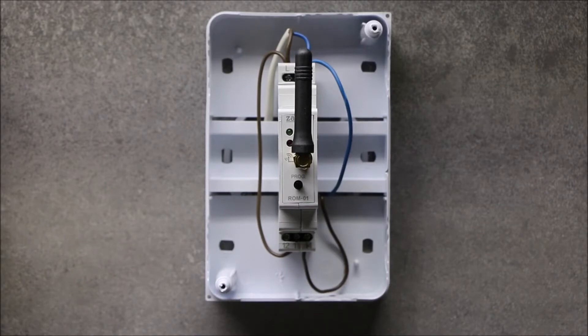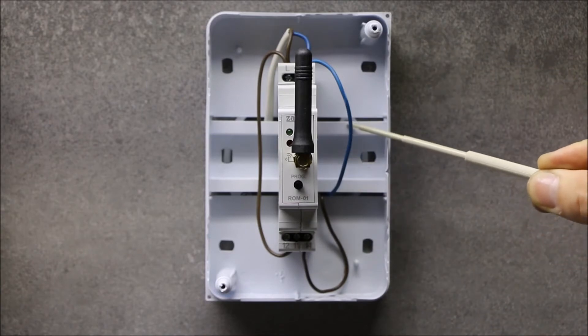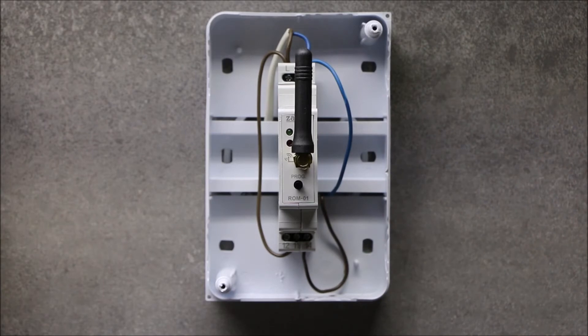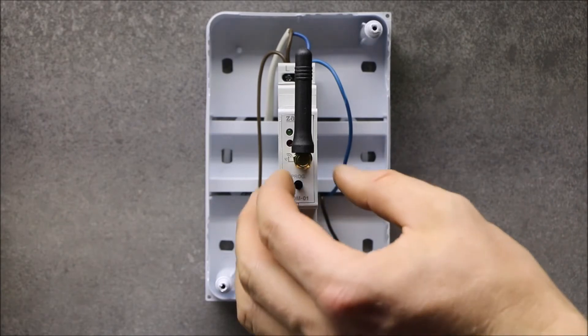The ROM01 receiver is a modular device for installation in switchboards on the DIN rail. In the case of metal switchgears, operating range of the receiver could be reduced.